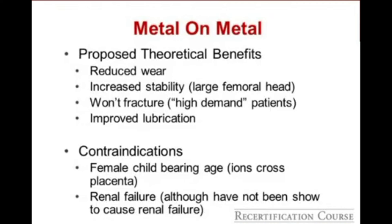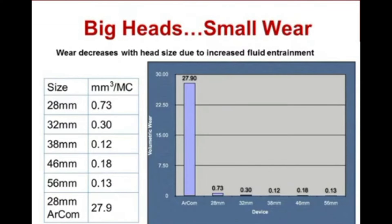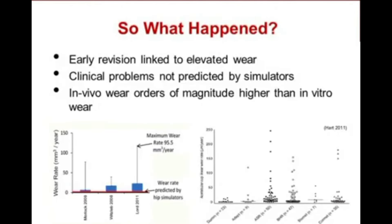Metal-on-metal total hips are a commonly tested item. Proposed theoretical benefits included reduced wear, increased stability, inability to fracture, and improved lubrication. Contraindications included females of childbearing age, as the ions cross the placenta, and renal failure. Hip simulator data suggested dramatically reduced wear with large-diameter metal-on-metal hips, but this did not pan out in vivo. We saw increased early revision rates — in vivo wear rates were orders of magnitude higher than what hip simulator data predicted.